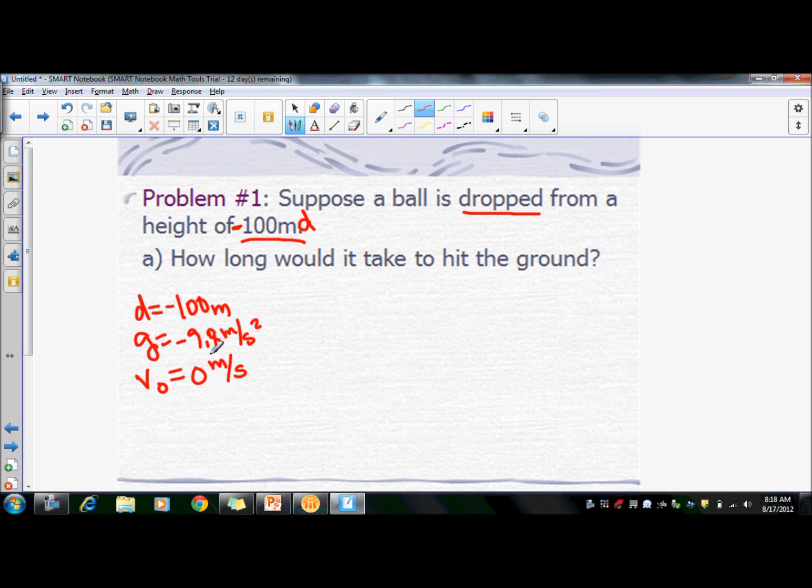So yes, out of one problem with one number, you can get three givens out of it. The word dropped implies that gravity is affecting it, and its initial velocity is zero.